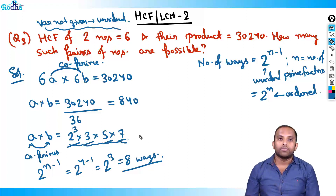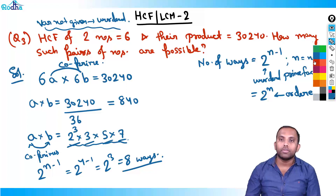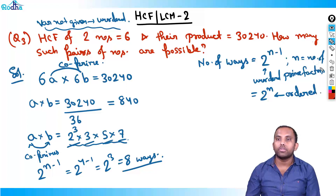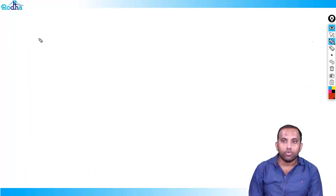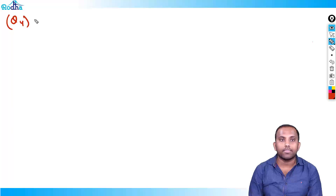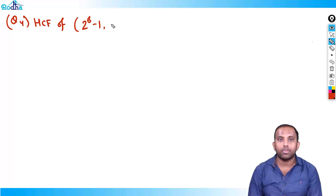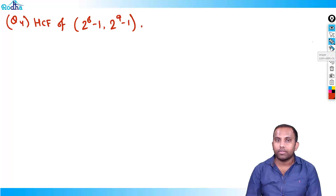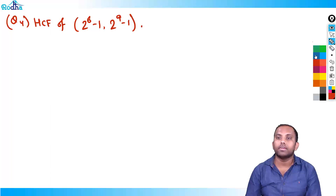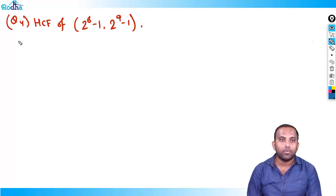That's a very good question. If you have any doubt please ping me in the forum. Now we'll move to question 4: what is the HCF of 2^6 minus 1 and 2^9 minus 1? This is a direct funda — I'll explain the concept behind it.